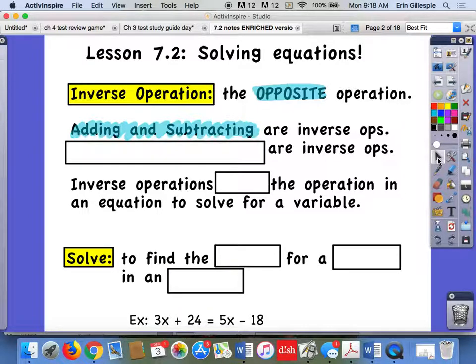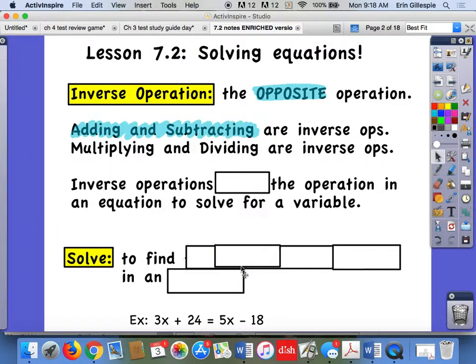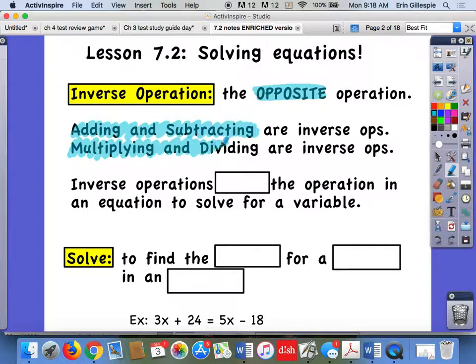And then the other blank here, I'll bet you guys could guess, if adding and subtracting are inverse or opposite operations, so are multiplying and dividing. They also undo each other, basically. And that's what it says in the snapshot of the link here, is that inverse operations undo the operation of an equation so that you can solve the variable.